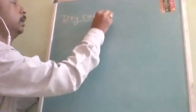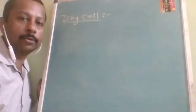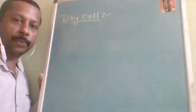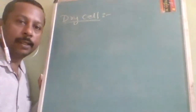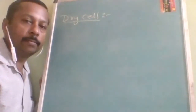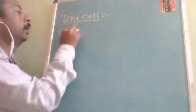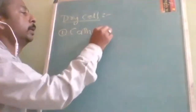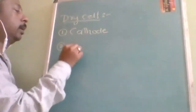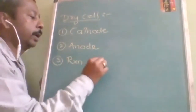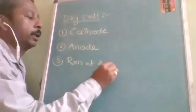Now we are going to start with the first topic: dry cell — also called the Leclanché cell. This is a very basic and old electrochemical cell. For every cell, I am going to address key points from the examination point of view. First thing they may ask is cathode, second is anode, third is reaction at anode.